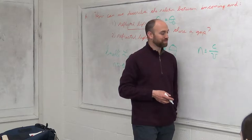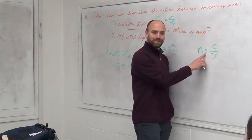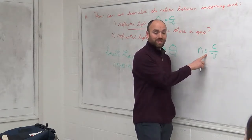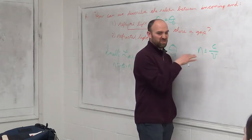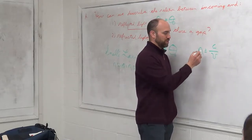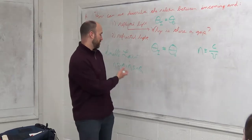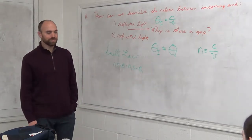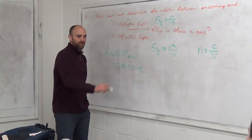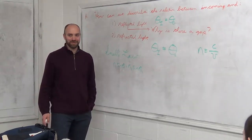What do the three lines mean? Stronger than equal to — it means 'defined as.' This is just a flat-out definition. There's no physical reason for it; we've defined it to make our life easier. So we could write C over V in all these equations if we wanted to, but we just write N because we're lazy.